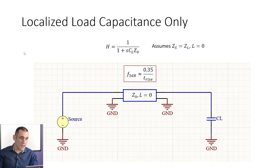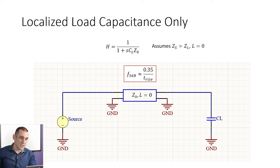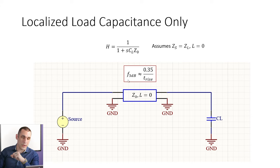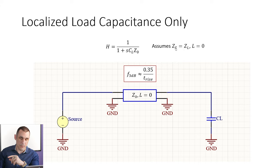When we had a model with a load capacitance in series with an interconnect, we found that the bandwidth-rise time relation was 0.35 divided by the rise time — the classic knee frequency formula that everyone should be familiar with. Up here we have the transfer function in the Laplace domain, and there are a couple of assumptions implicit in here. We've also assumed that L equals zero.